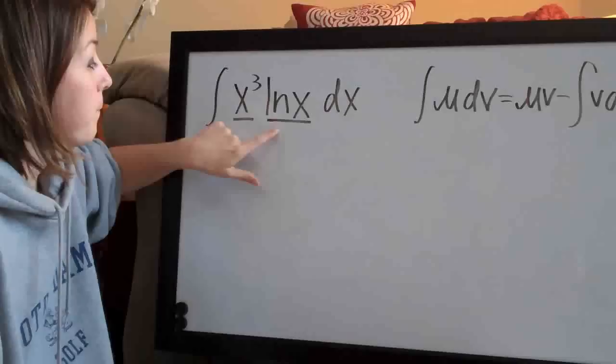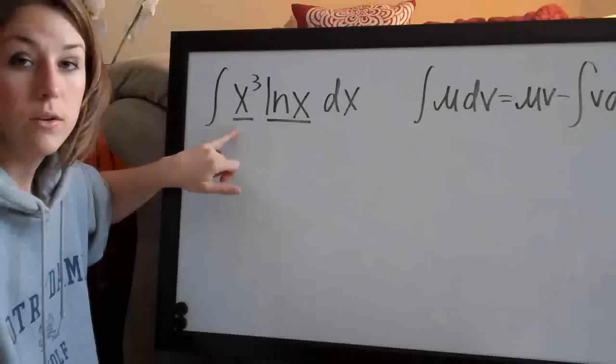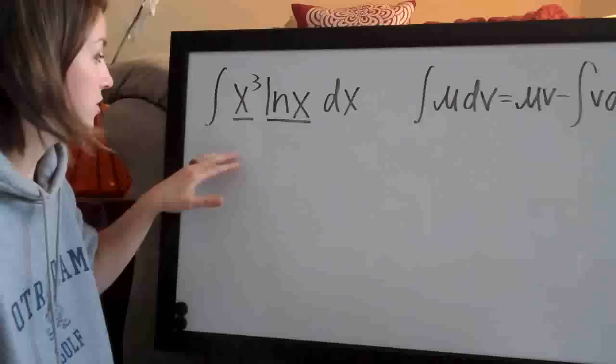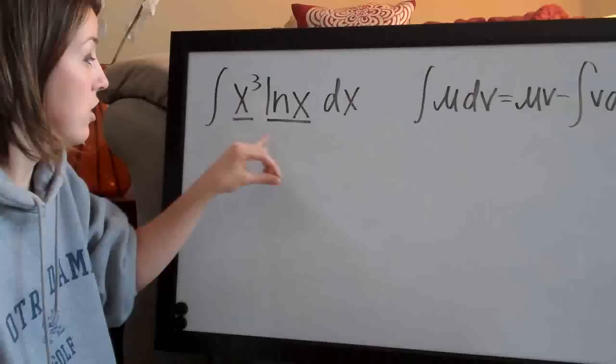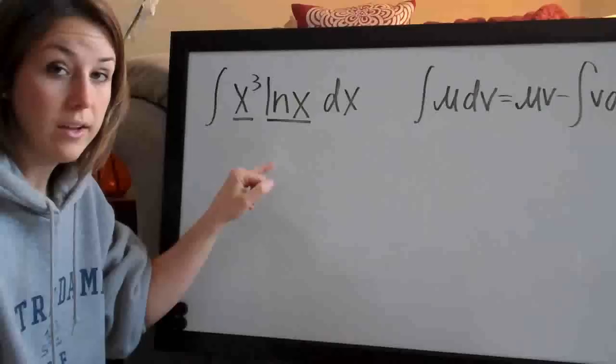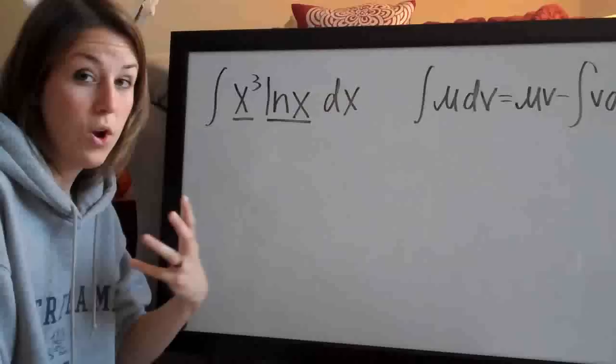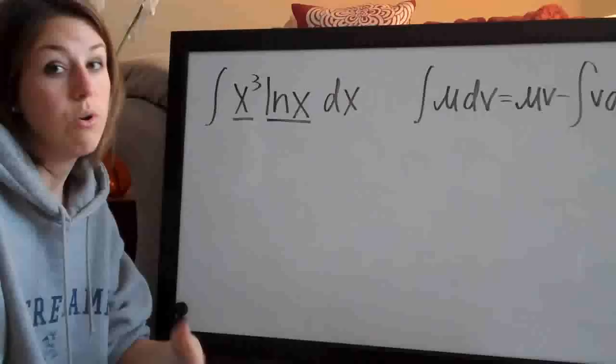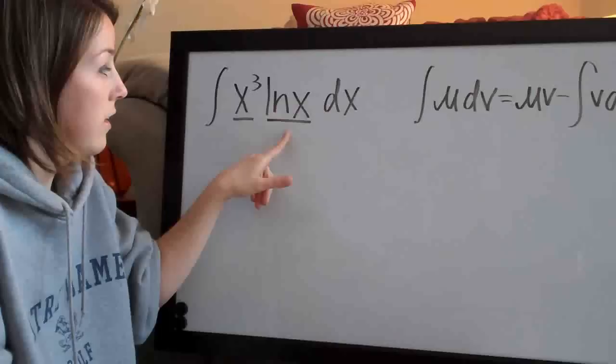For example, if we assigned u to x cubed, we'd take the derivative and get 3x squared, which isn't really simpler. On the other hand, if u is natural log of x, we take the derivative and get 1 over x, which gets rid of the ln from the problem — that seems much simpler. So that's my first guess: I'll assign u to natural log of x and go with it. If you're wrong, you can always start over and flip u and dv.